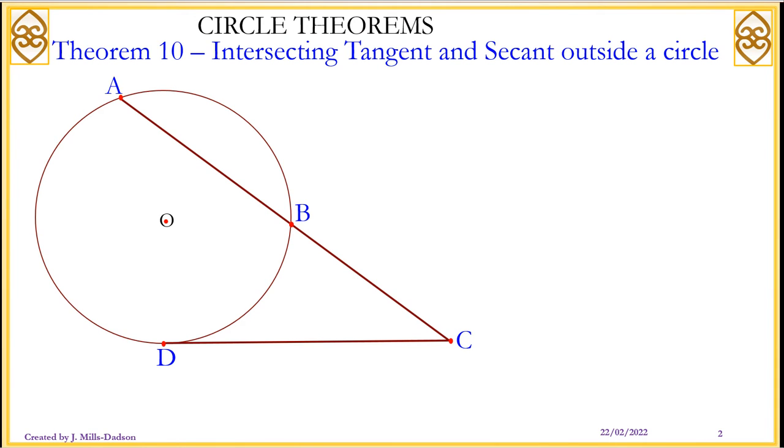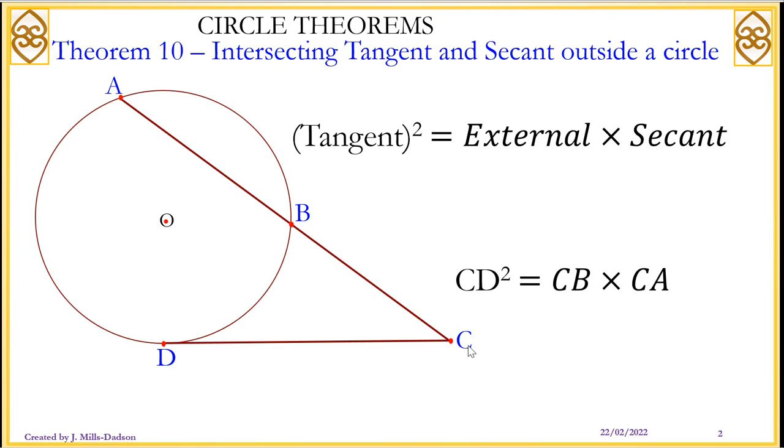So that's the theorem 10, intersecting tangent and secant outside a circle. So that is a secant AC and that's a tangent DC. What does the relationship say? The relationship says always the tangent, the length of the tangent squared must always equal to the external of the secant times the whole secant. So you can see DC squared must be equal to CB times CA, full length of the secant. Now let's see why is this so. Let's look at some proofs.